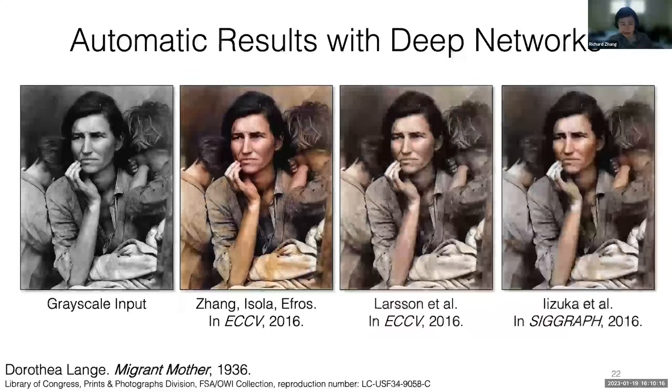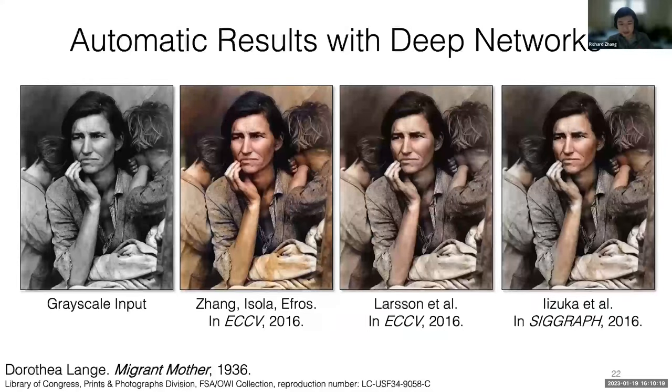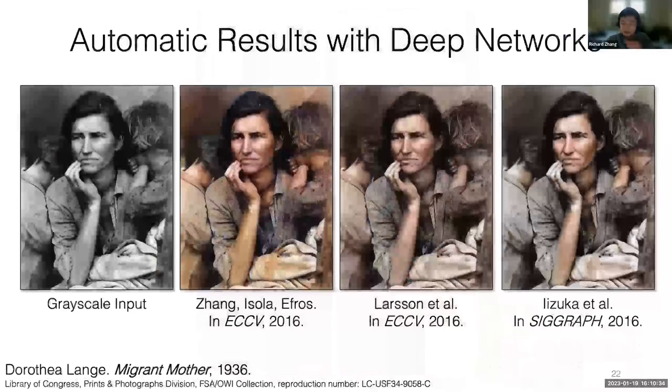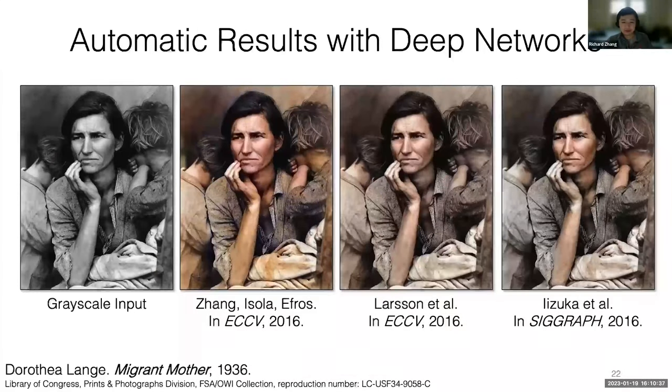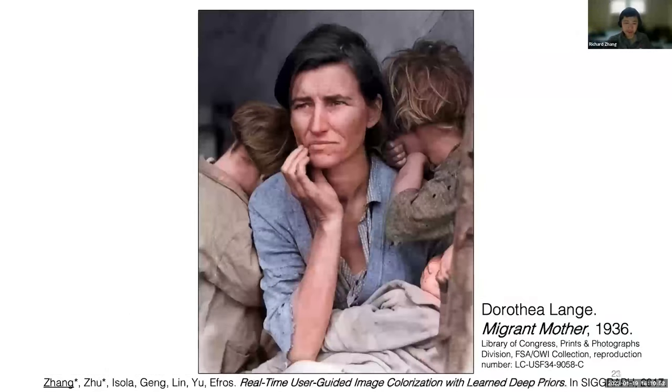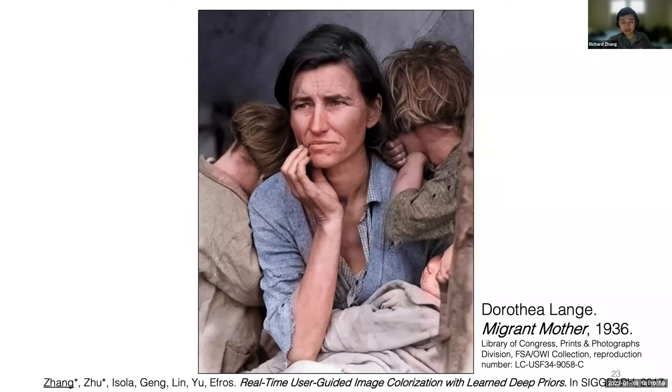Back in 2016, there was our method and a few other methods. They were all predicting just one result. Interestingly, they all predict kind of the same kind of results as well. But there's really a lot of different possibilities. What we wanted to do was basically what we came to the conclusion was that we maybe needed a user in the loop to select what the user actually wanted. We can't just give one result. We need to give a whole space of results that the user can interact with to choose what they want. Using our user guidance system with interaction, a user could go in and produce this kind of result with a blue shirt and a gray shirt with the children, or they can predict something like this with a green shirt or this.